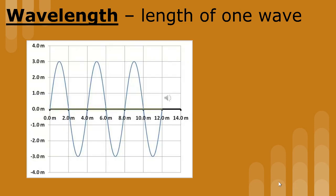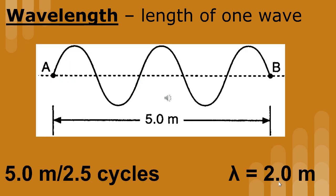Use what you've learned to find the wavelength of this wave. Sometimes you'll be given the length of several waves and be asked to find the wavelength. In this picture there are two and a half cycles, which means two and a half waves. Those two and a half waves have a length of five meters.